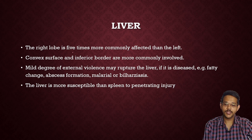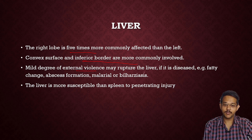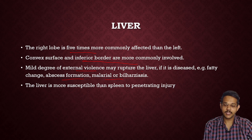The right lobe is five times more commonly affected than the left lobe. The convex surface and inferior border are commonly involved in lacerations. Mild degree of external violence may rupture the liver if it is in conditions like fatty changes, abscess formation, malaria, or cirrhosis, where the liver is enlarged and even mild violence can cause lacerations.